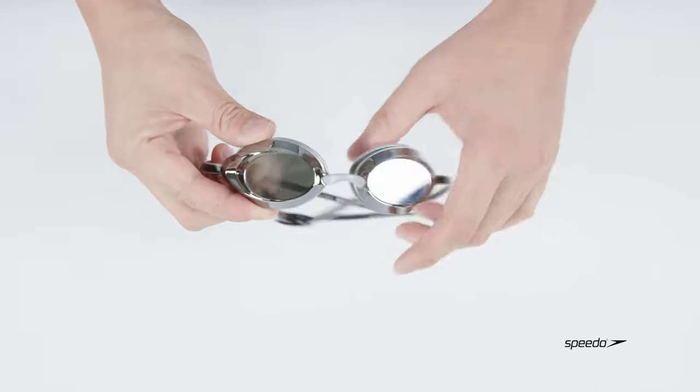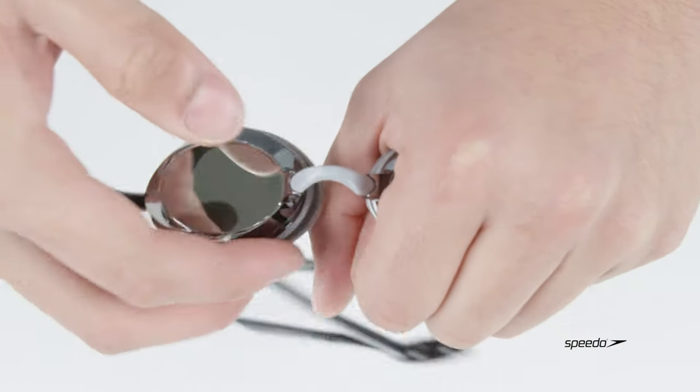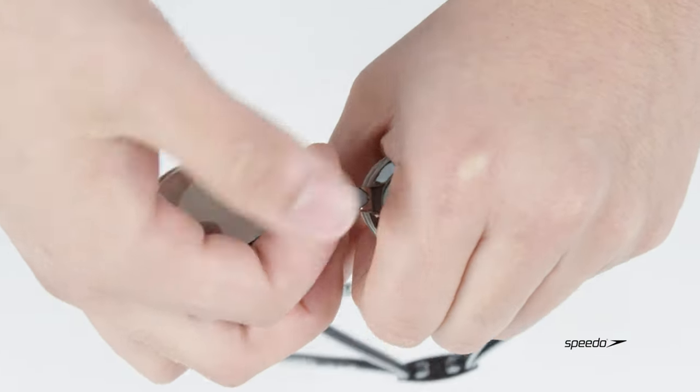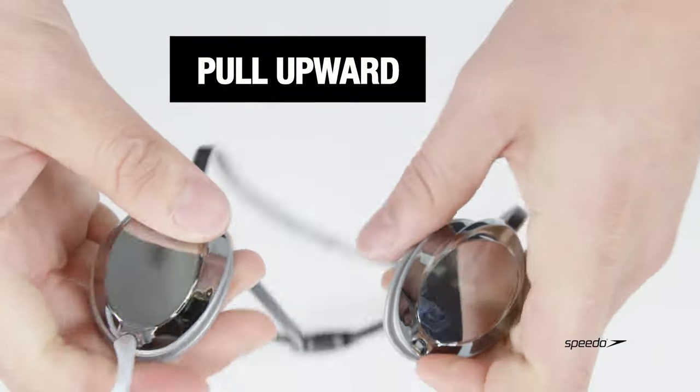To change your Vanquisher nose bridge, place one hand over the lens of the goggle, your index finger underneath the nose bridge, and use your thumb to anchor as you pull in an upward motion.